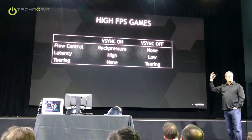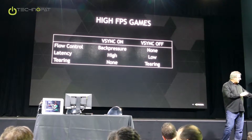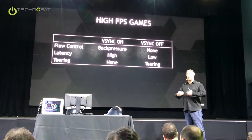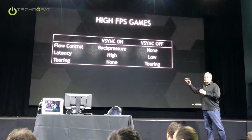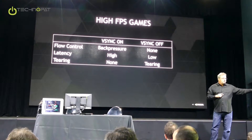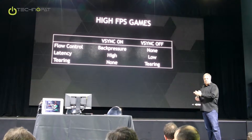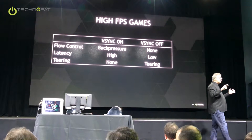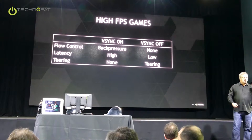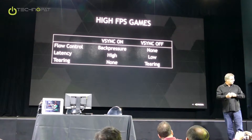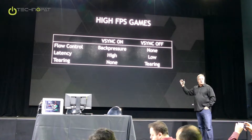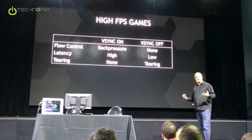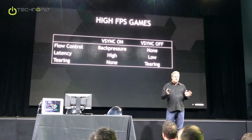If you turn vSync on, that pipeline gets back-pressured all the way to the game engine, and the whole pipeline slows down to the refresh rate of your monitor. So when you turn vSync on, you're telling the game engine to slow down because you can only generate effectively one frame for every refresh interval. When you turn vSync off, you don't care about monitor synchronization — bring it as fast as possible, so the thing renders 400 frames per second.